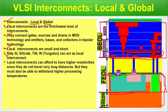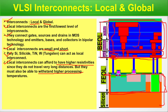Local interconnects can afford to have higher resistivity since they do not travel very long distances, but they must also be able to withstand higher processing temperatures. If resistivity of a wire is higher, heating can happen — the longer the length and higher the resistive material, the more it resists the current. For local interconnects, we must choose a material with higher temperature handling capability so it can survive the fabrication process. If the interconnect layer breaks down during fabrication, that is a failed chip.